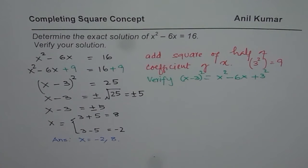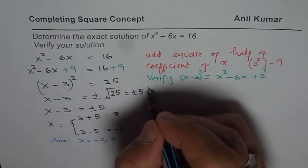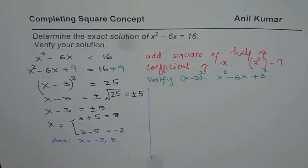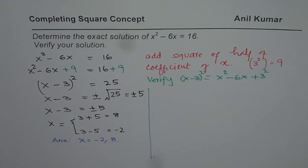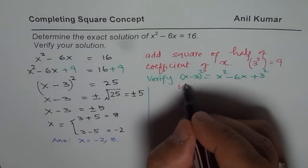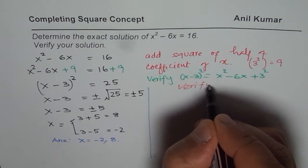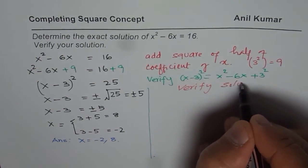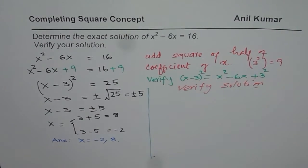So, that is how you actually solve a quadratic equation using completing squares. Now, let us check or verify the solution. So, in this case, we will now verify the solution. So, we have two solutions. How to verify?